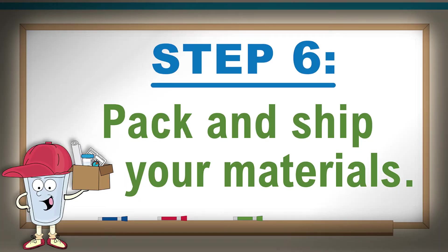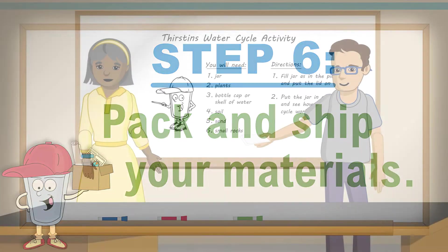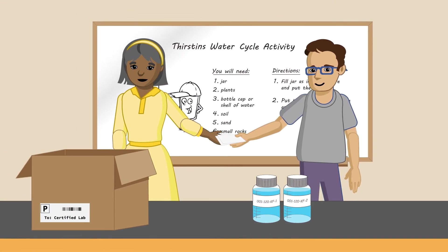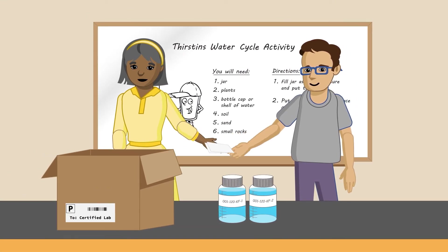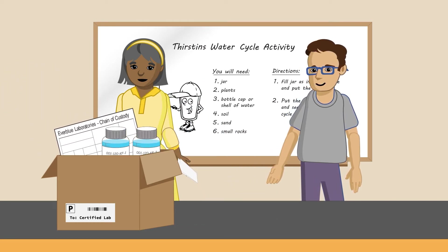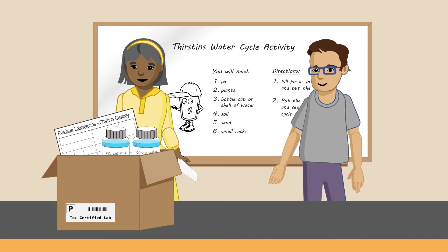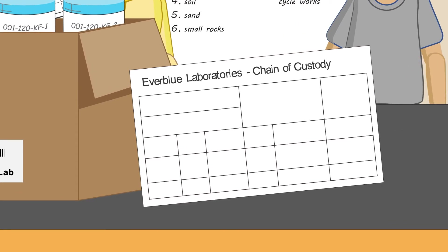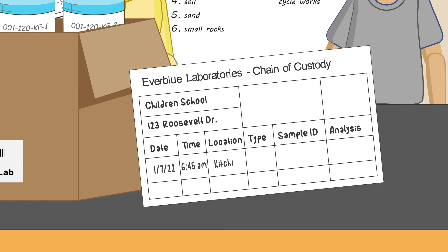Step 6: Pack and ship your materials. Once you have collected all of your samples, follow the instructions from the lab to pack and ship the samples as soon as possible, as waiting too long could lead to problems that require resampling. Ensure that your samples have been properly labeled and that they are securely packed in the shipping container. Most labs will require you to complete a chain of custody form, which will typically include the date, time, location, type, and ID of the samples you are sending to the lab.